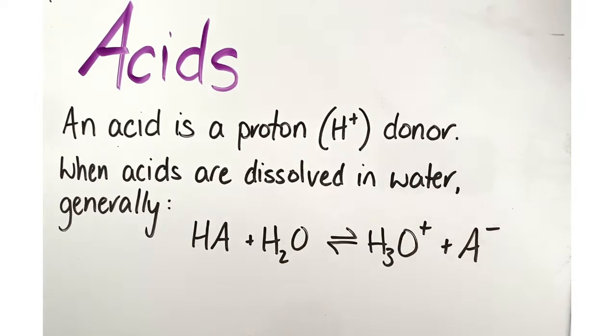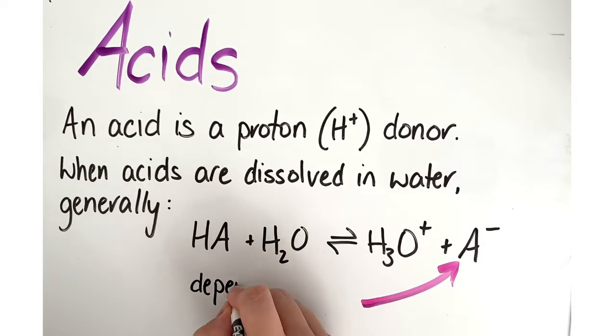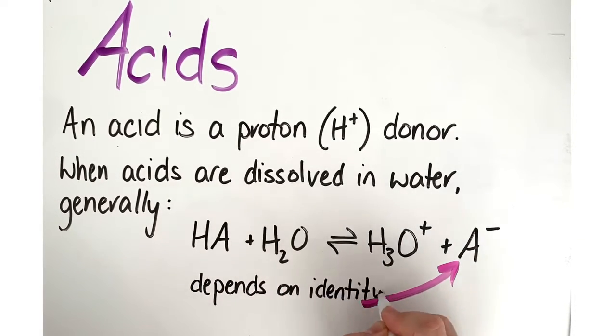In the general case, our formula is HA, where A denotes the identity of an acid, plus H2O creates an equilibrium reaction with H3O+, the hydronium ion, and a negative ion.